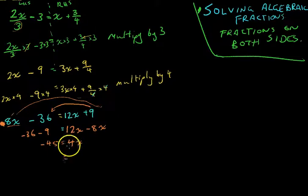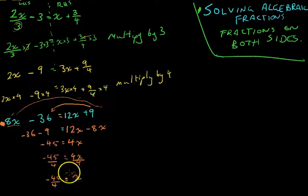Last step here. We need to get rid of our 4x. So, that's going to be 4x divided by 4 equals negative 45 over 4. That's equal to x. Let's just leave it as a fraction here. Negative 45 over 4. You could type that into your calculator and get a decimal if you wanted to.